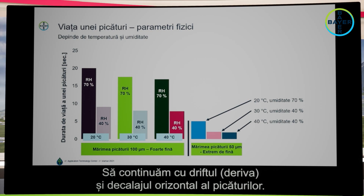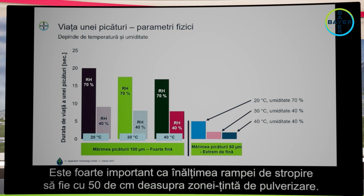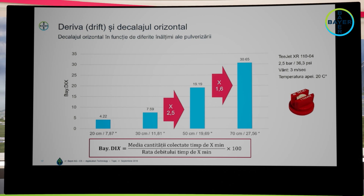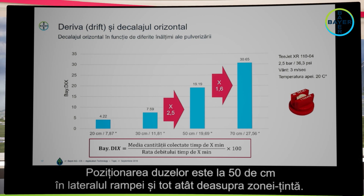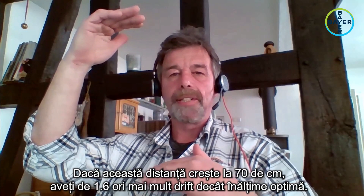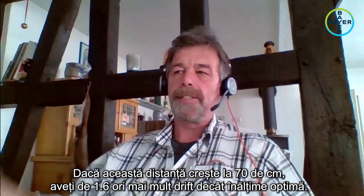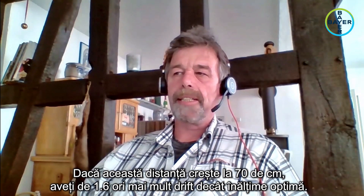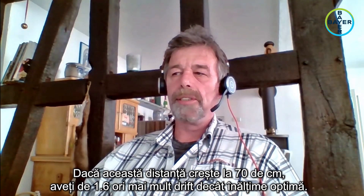One key point is also the boom height above the target. Normally your boom height should be around 50 centimeters over the target, with a 50 centimeter nozzle distance. The boom height to your target size matters — if you increase to 70 centimeters, you have 1.6 times more drift.